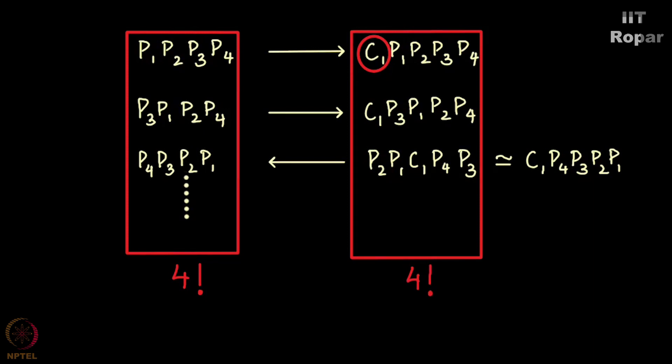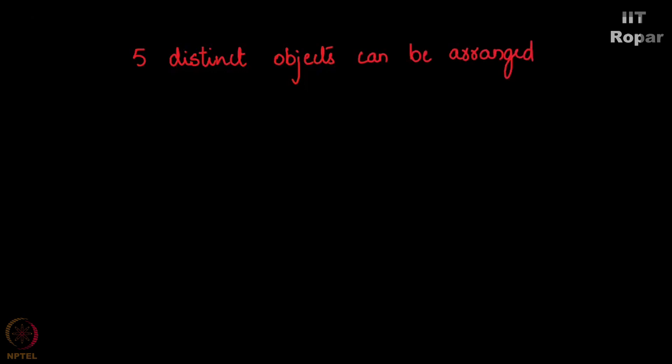It must be 4 factorial. Did you see how ingeniously bijection came to our rescue here? So I had earlier asked you how many such over counts did we do? How many such elements did we count more than once? 4 factorial is the number. So 5 distinct objects can be arranged around a circular table in 5-1 factorial which is 4 factorial ways. Now I can write it as in general n distinct objects can be arranged around a circular table in n minus 1 factorial ways.